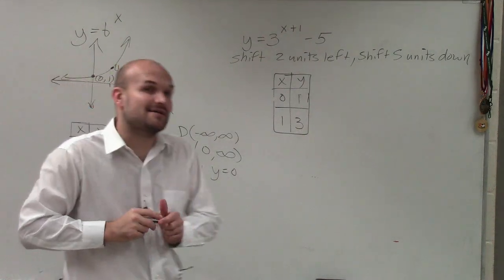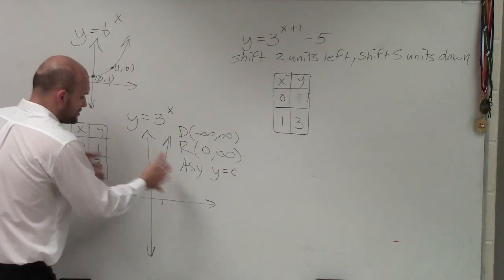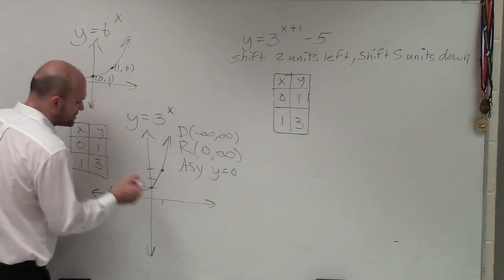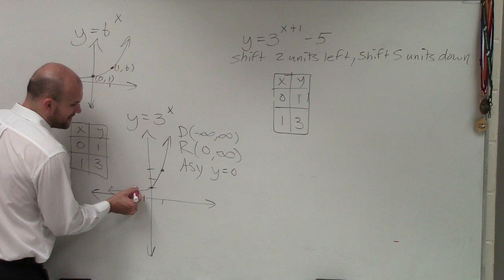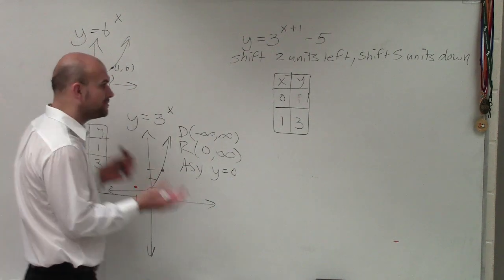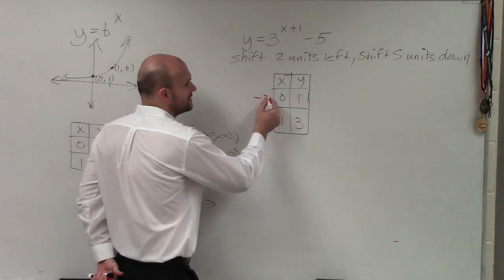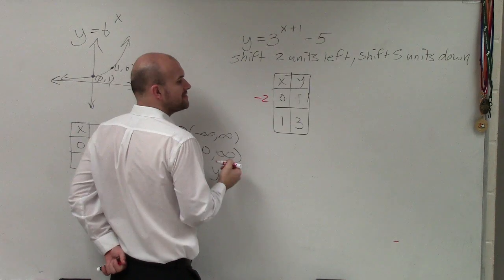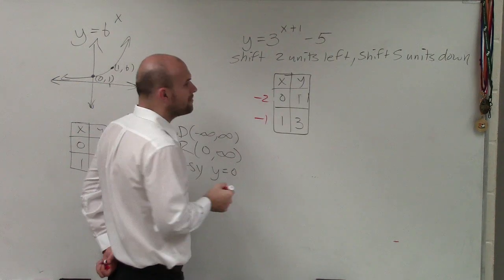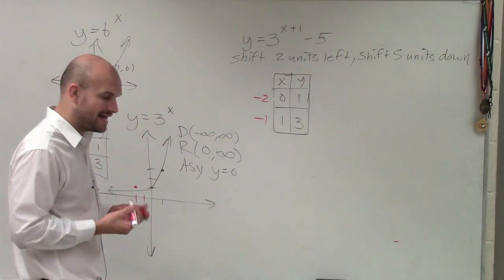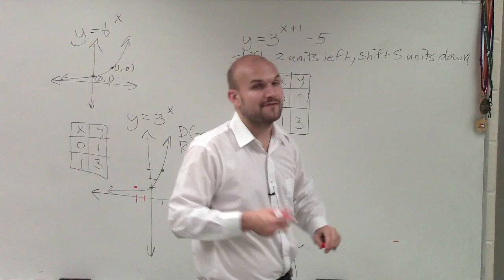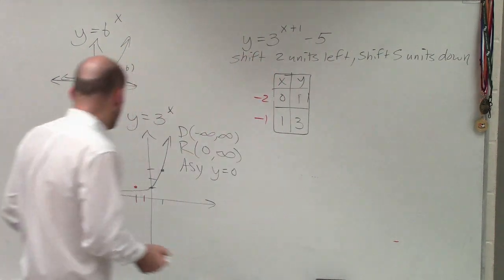Because, ladies and gentlemen, it says two units left. I'm going to take this graph and shift it over two units to the left. So if I shift this graph two units to the left, instead of being at 0, it's now going to be at negative 2. So really what I'm doing is I'm subtracting two units from the x values. So therefore, my new table should include the points negative 2 and negative 1 for the x coordinates. Then it says shift my graph five units down.